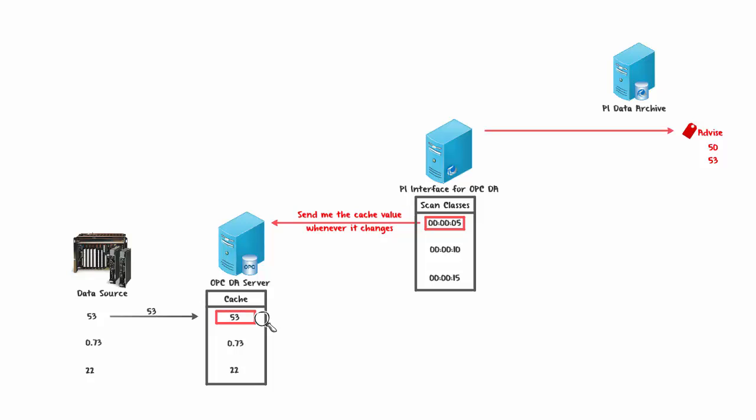After another arbitrary amount of time, if the Data Source updates, the Cache Value updates, and once again our Advise Point gets a new value. This is a really efficient way of getting data from the OPC Server, because the PI Interface made a single request and obtains all new values coming into the Cache. The scan class frequency — say 5 seconds — just limits how many values the PI Interface sends to the PI Data Archive, meaning it won't send more than one value every 5 seconds.